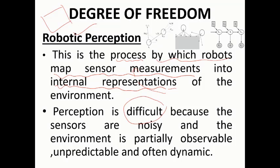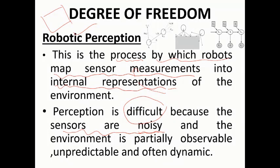Perception is actually a complex process. It is difficult because sensors are noisy — most of the time we cannot collect good data or complete observations. In that case, we will not have complete understanding of the environment. The environment becomes partially observable and unpredictable, because we cannot completely know the environment, and it is often dynamic.